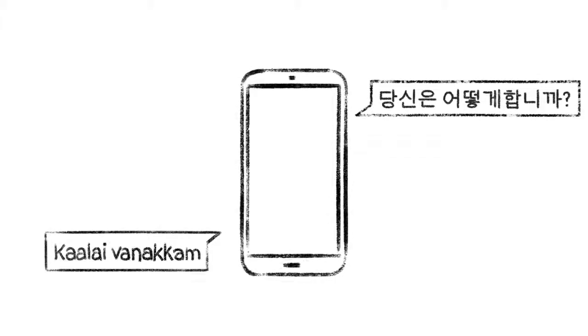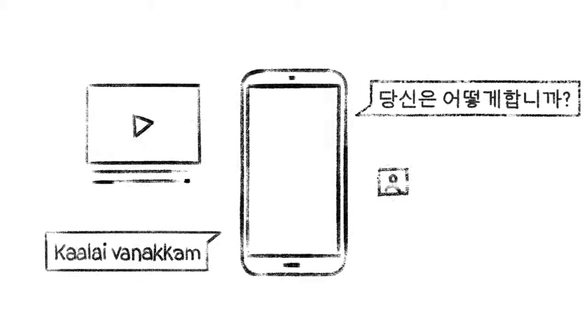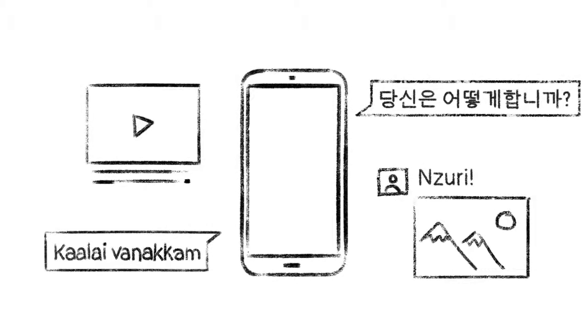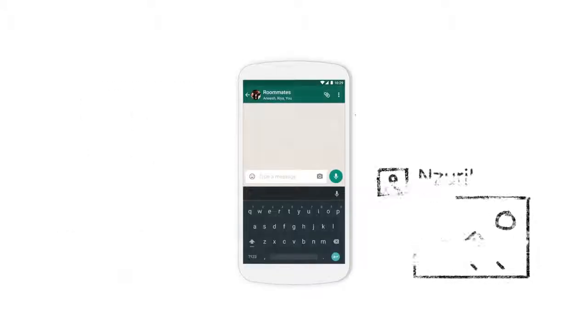We've all been there. You have something in your phone that you need to translate. Maybe it's a text from your coworkers, a YouTube comment, or a post from a friend. And you just need to know what it says.